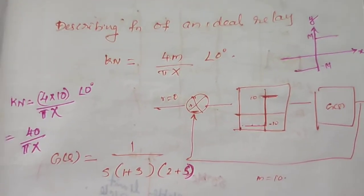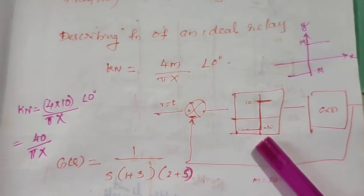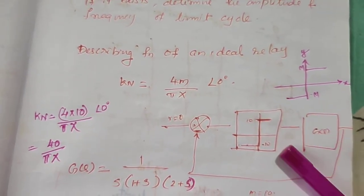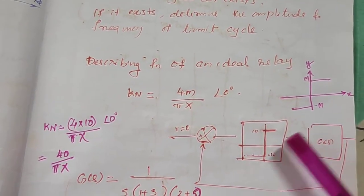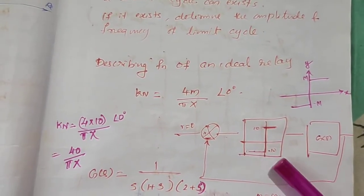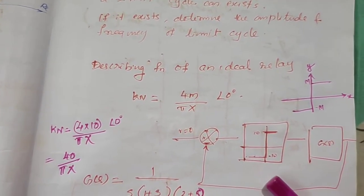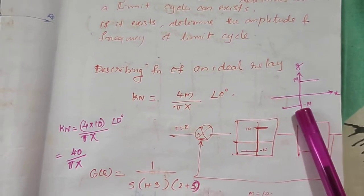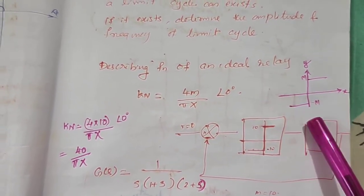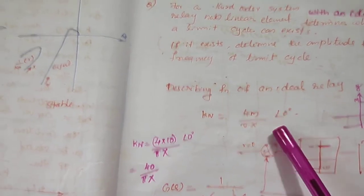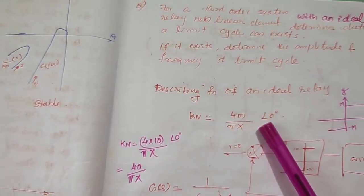The first step is to find the describing function for the nonlinear element, which is a relay. We have already derived the describing function for the relay nonlinear element — you can refer to my previous videos or the Nagarkar textbook, ACT module 5 and 6 materials. For an ideal relay with switching values +M and −M, the describing function is 4M divided by πX, at angle 0.